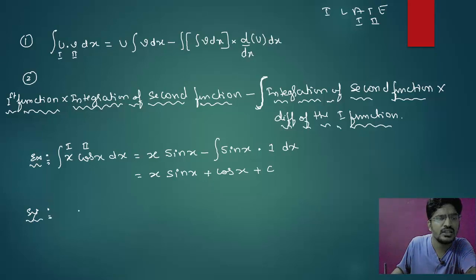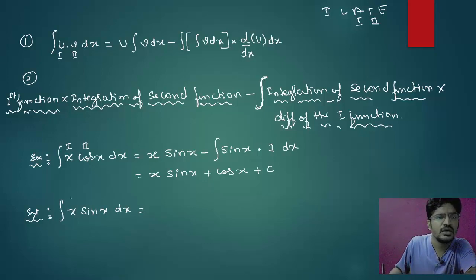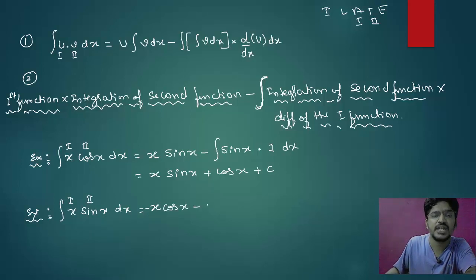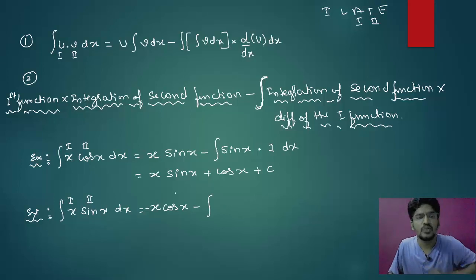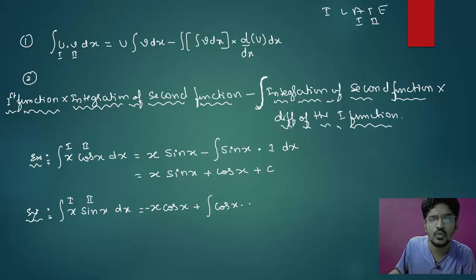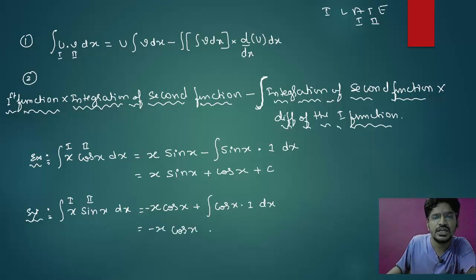Example 2: integration of x·sin(x) dx. Take x as first function and sin(x) as second function. Write first function x as it is, integration of sin(x) is –cos(x), minus integral symbol. Now repeat: –cos(x) multiplied with differentiation of x, which is 1. So minus into minus gives plus cos(x). Therefore the answer is –x·cos(x) + sin(x) + C.